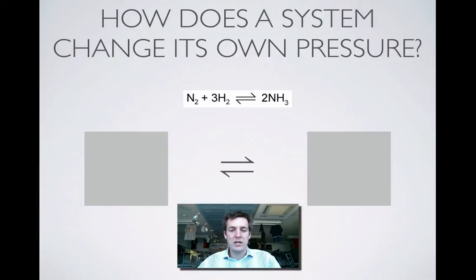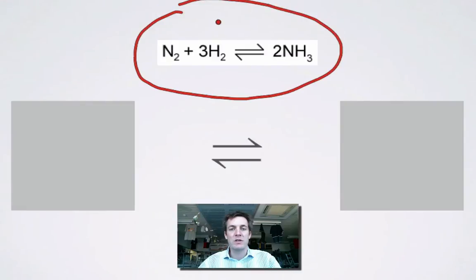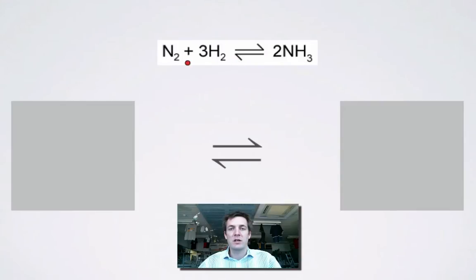Well, let's just imagine this equilibrium system here. This one is the Haber process. It's quite a handy one for this particular example because all these things are gases, so we're dealing with things that will exert a pressure inside a container. Let's just imagine a situation where we've got one nitrogen molecule and the three hydrogen molecules that we need to react with it.